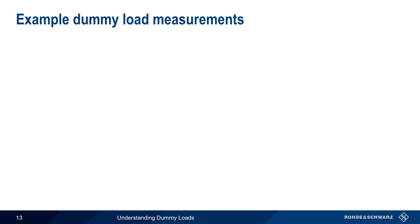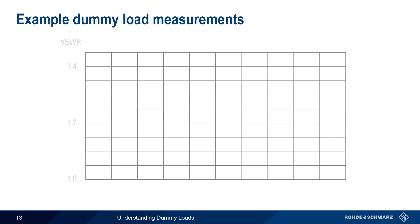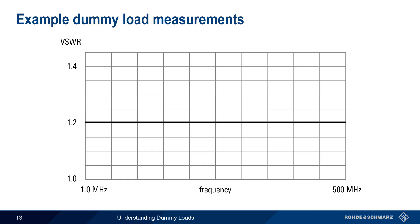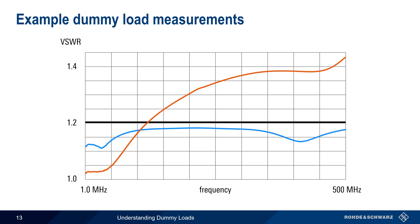Let's compare two dummy load measurements, looking at VSWR as a function of frequency. Both loads are specified as having a VSWR of less than 1.2 over the frequency range of 1 MHz to 500 MHz. Our first load has some small variation but VSWR remains between 1.1 and 1.2. Our second load starts with a much lower VSWR, but only remains below the specified limit for frequencies under about 150 MHz.